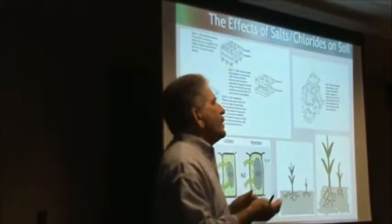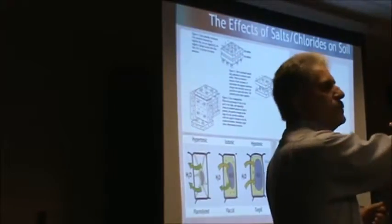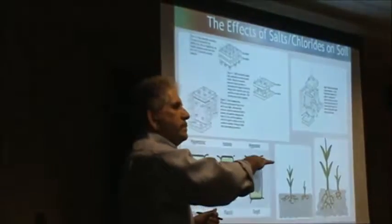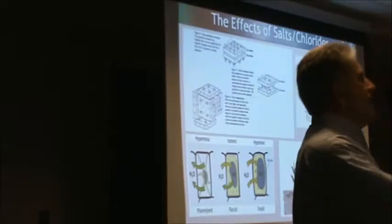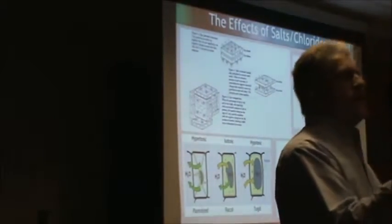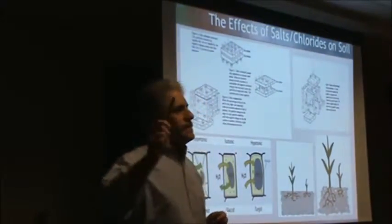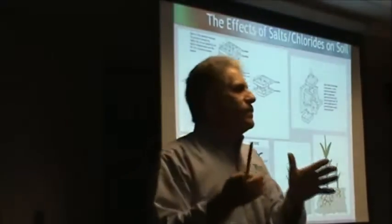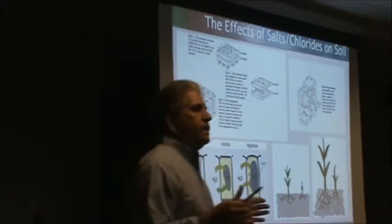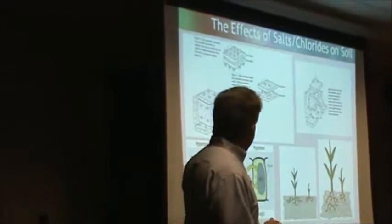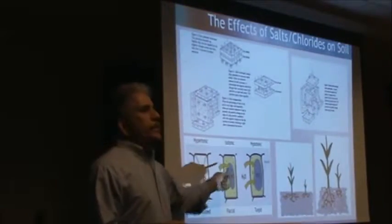Does anybody notice after a production water spill that moisture starts running over those areas where produced water was? That's because the sodium locks up the soils and no longer allows moisture to go down and through. That's actually the number one cause of plant death — not the sodium or chlorides directly. Obviously high levels are a problem, but that's not the primary cause.